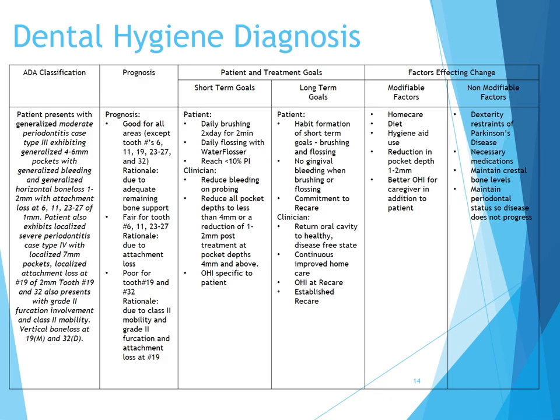Long-term goals for the clinician are to return the oral cavity to a healthy, disease-free state, continuous improved home care, OHI at recare, and an established recare schedule. Modifiable factors include home care, diet, hygiene aid use, reduction in pocket depths 1 to 2 millimeters, and better OHI for the caregiver in addition to the patient. Non-modifiable factors include the dexterity restraints of Parkinson's disease, necessary medications, maintaining crestal bone levels, and maintaining periodontal status so disease does not progress.